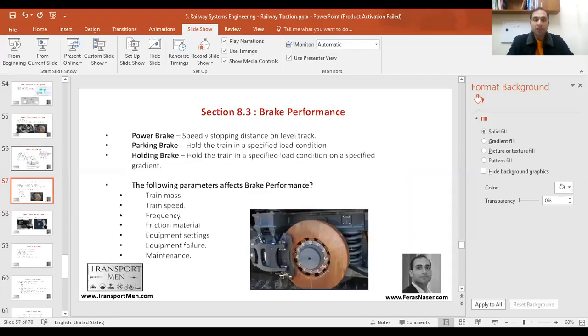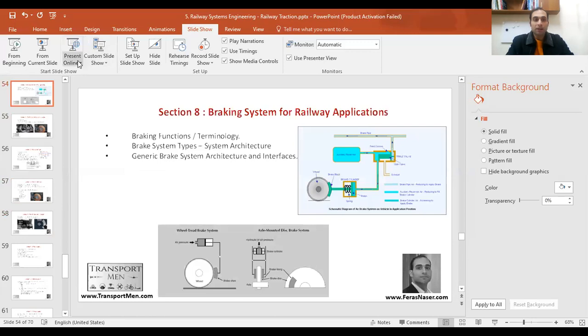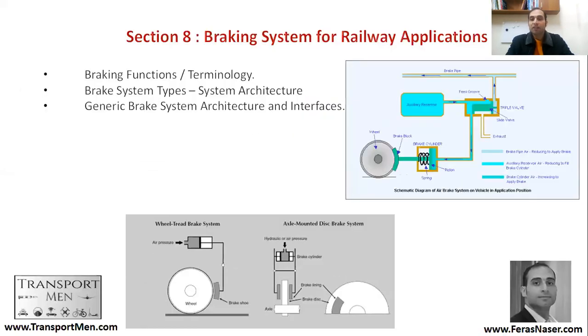We carry on with our explanation for Chapter 3, railway rolling stock systems, specifically railway traction systems. We've reached Section 8, where we'll be talking about braking. So let's have a look at braking systems for railway applications. We'll be looking at braking functions and terminology, brake system types, system architecture, and how to apply braking — general system architecture and interfaces.